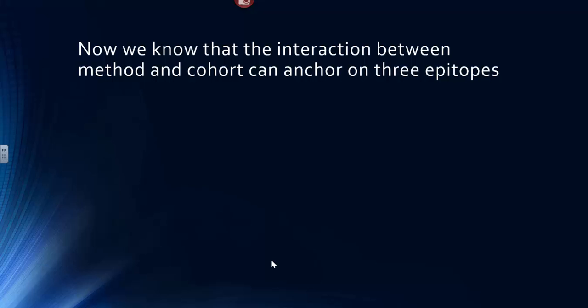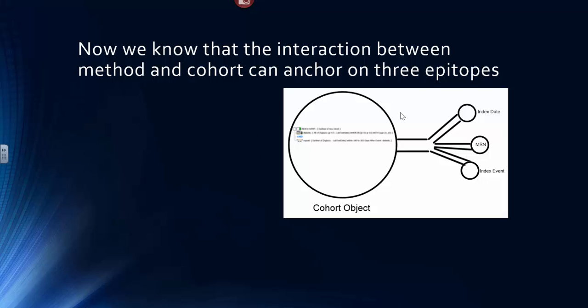Now we know that the interaction between method and cohort can anchor on the three epitopes. Just remember, you have the cohort object, and on the surface, for each individual member, you can see the Index State, the medical record number, and the Index Event.